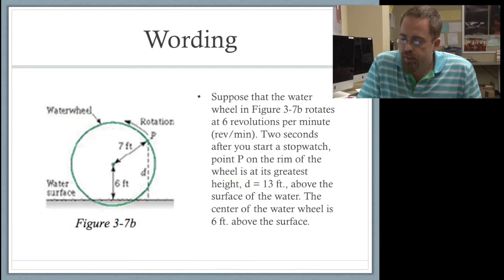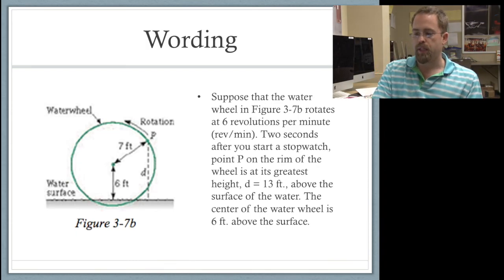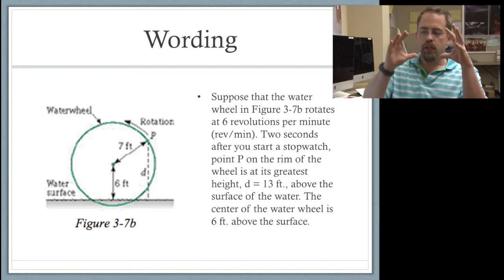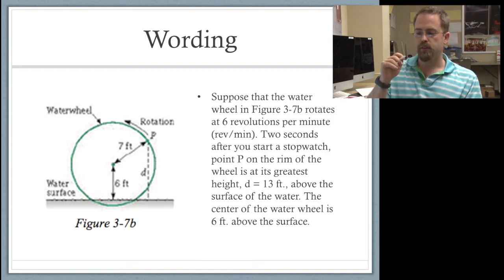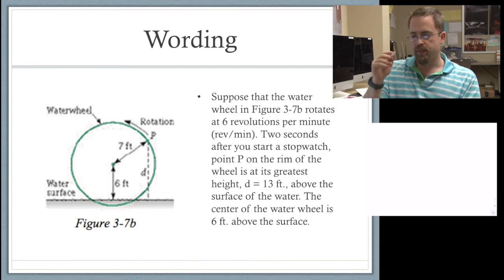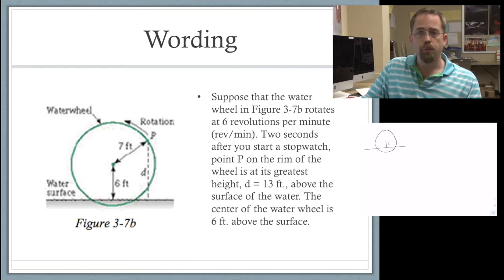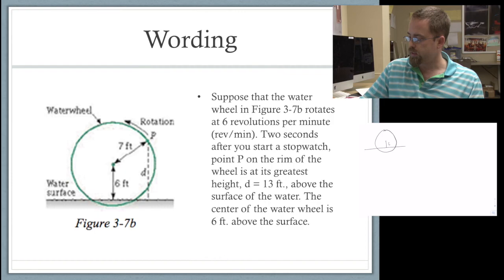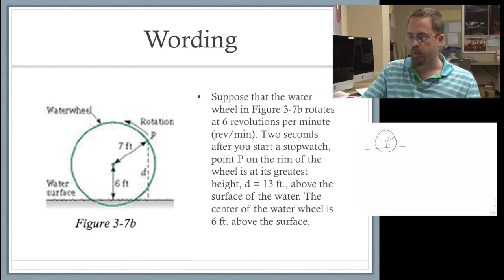Here you can see this is the problem from the textbook using figure 3-7b. There's a picture of the water wheel and you can see it dips into the water a little bit. The distance from the center to the water is 6 feet, which is good to know because the actual water wheel itself is 7 feet in radius. So the water is a foot — we're a foot into the water.